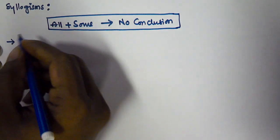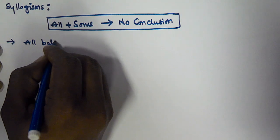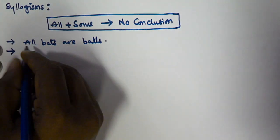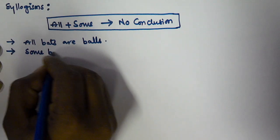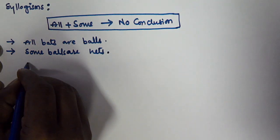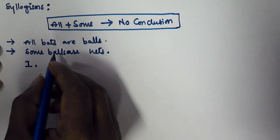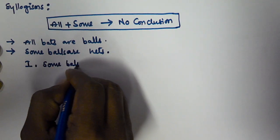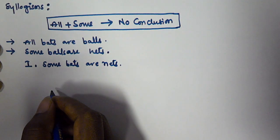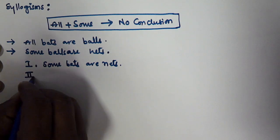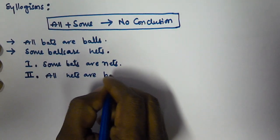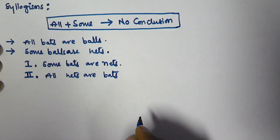The first statement is: 'All bats are balls.' The second statement is: 'Some balls are nets.' The first conclusion given is: 'Some bats are nets.' The second conclusion given is: 'All nets are bats.'